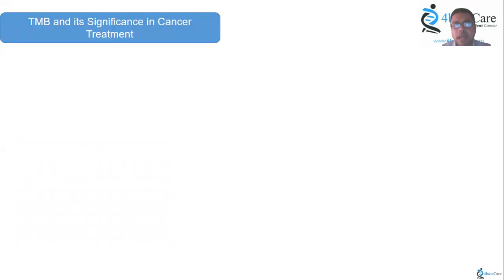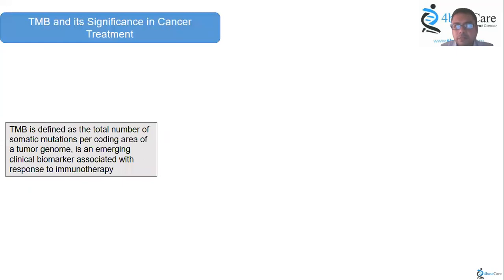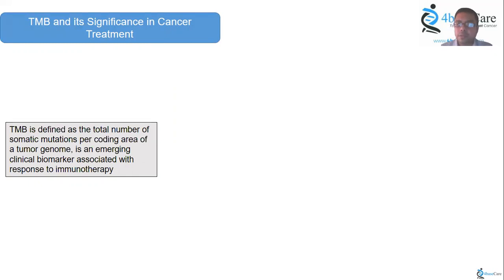The first marker is TMB and its significance in cancer treatment. Our normal cells get genetically altered and give rise to cancer due to some exogenous or endogenous influences. TMB is defined as the total number of somatic mutations per coding area of the tumor genome. It is considered to be an emerging clinical biomarker associated with immunotherapy.